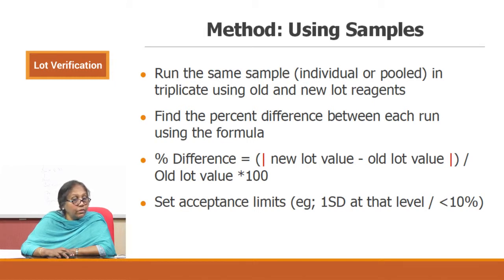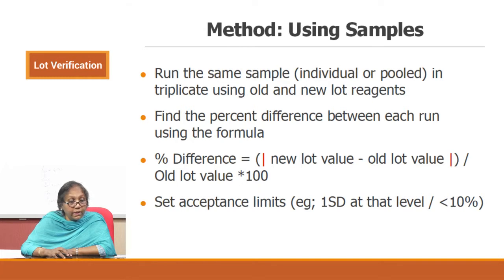Find the percentage difference between each of these using the formula: percentage difference equals the absolute value of (average of the new lot minus the old lot value), divided by the old lot value, multiplied by 100. Then you set your acceptance limits.